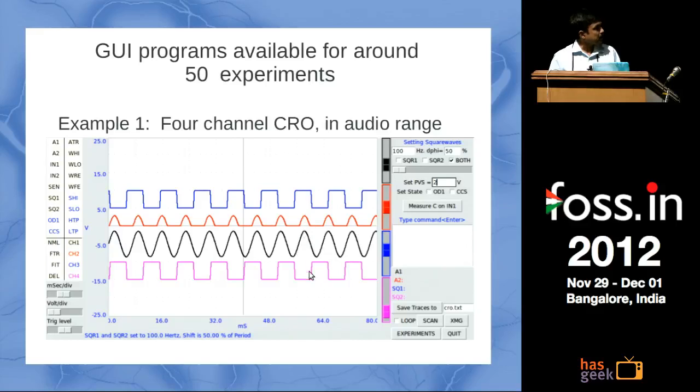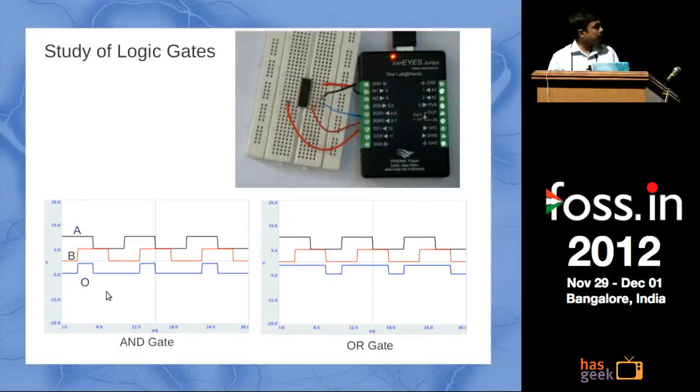These are some examples. If somebody is studying logic gates, you put the chip here and connect, and this will feed the input and take the output. You can see the graphs coming. For an AND gate, you have two inputs and the output will be like this. For an OR gate it will be like this. This is very easy to do and you do not need anything other than the box because it provides the power also.